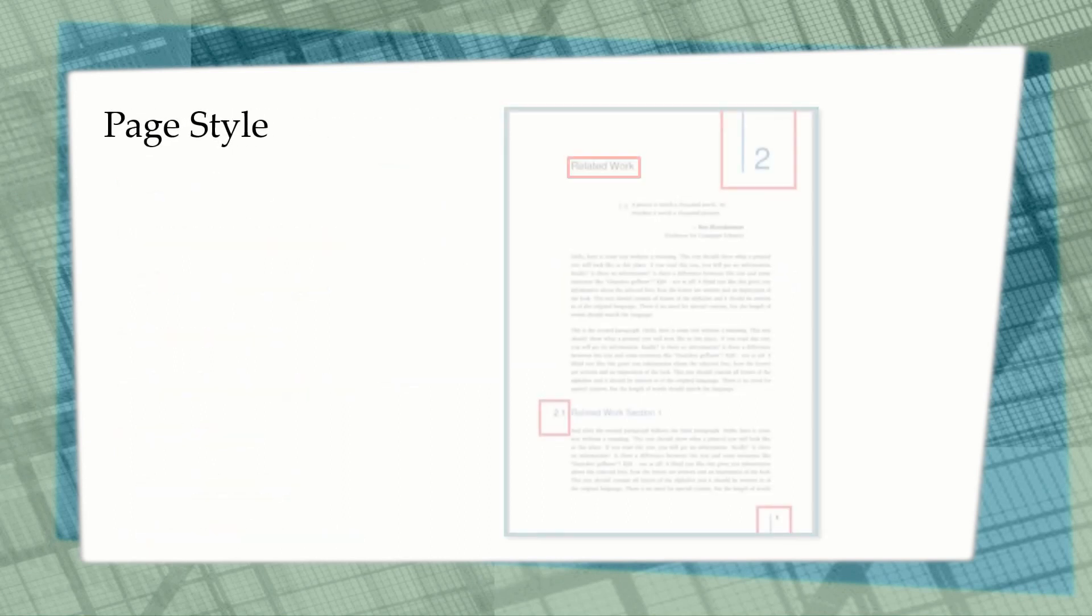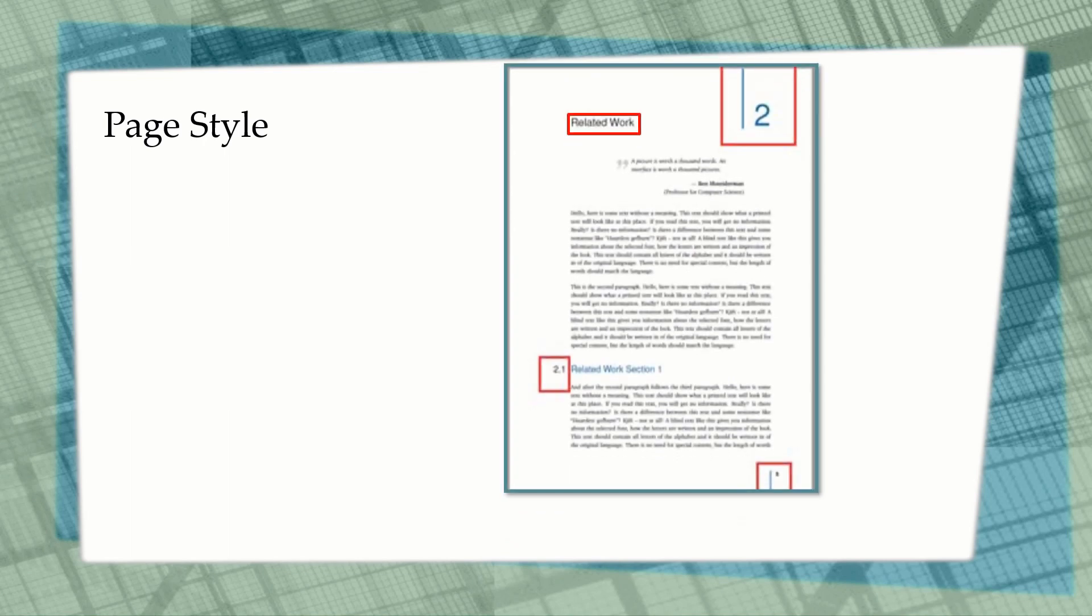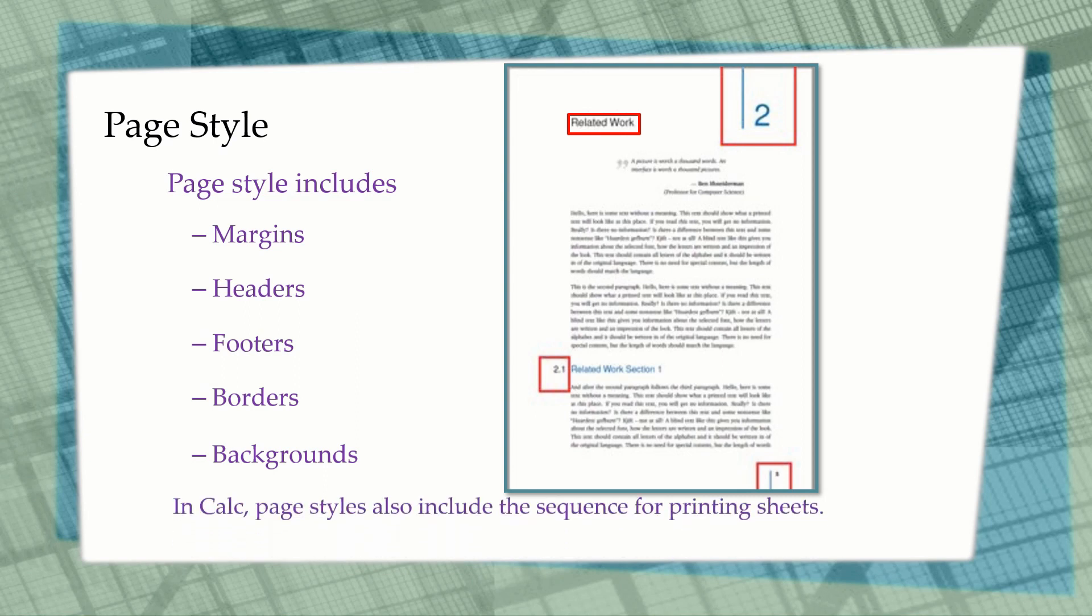The first style is the page style. As you can see in this picture, we have a predefined format for the chapter number, topic, subheading, and footer. Page styles include margins, headers, footers, borders, and backgrounds. They define the basic layout of a page. In Calc, page styles also include the sequence for printing sheets.